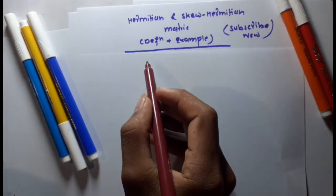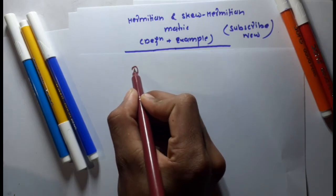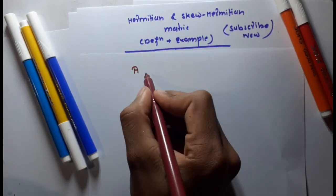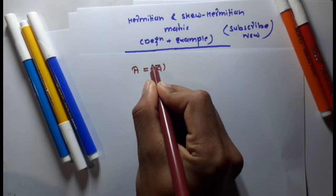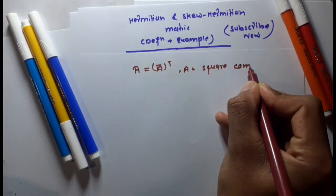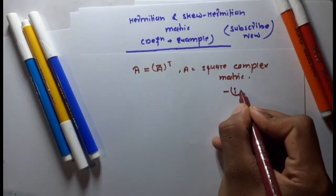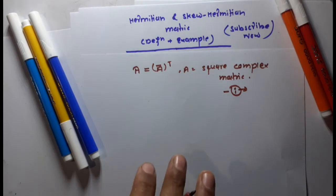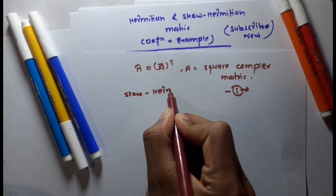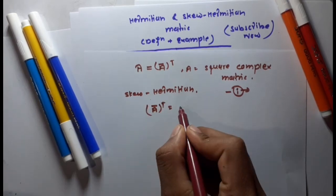A Hermitian matrix is a square complex matrix A where A equals its own conjugate transpose, meaning A equals A-bar transposed. This matrix contains imaginary numbers. A matrix is said to be skew-Hermitian if A-bar transpose equals minus A.